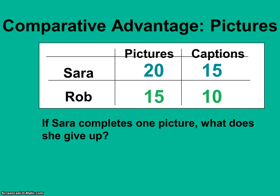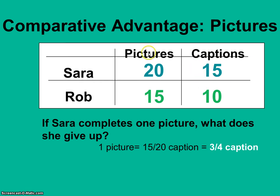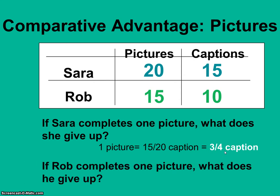The way the data is presented right now, we can't make a comparison unless we reduce these numbers. To say that the opportunity cost for Sarah of cropping 20 pictures is 15 captions, and the opportunity cost for Rob of cropping 15 pictures is 10 captions — that doesn't give us a good point of comparison. So we're going to reduce: we pull captions over pictures to figure out Sarah's opportunity cost of one picture. Sarah's opportunity cost of one picture is 15/20 of a caption, or 3/4 of a caption. Rob's opportunity cost of one picture is 10/15 of a caption, or 2/3 of a caption.